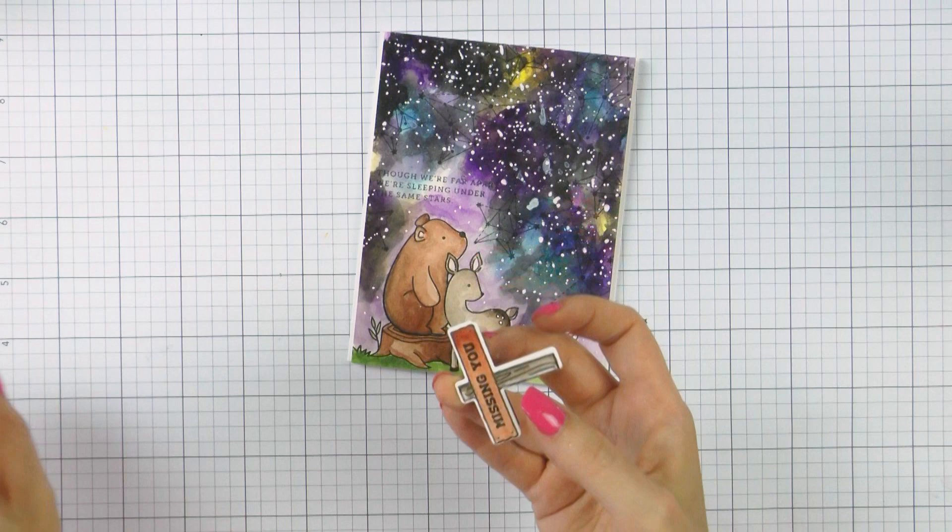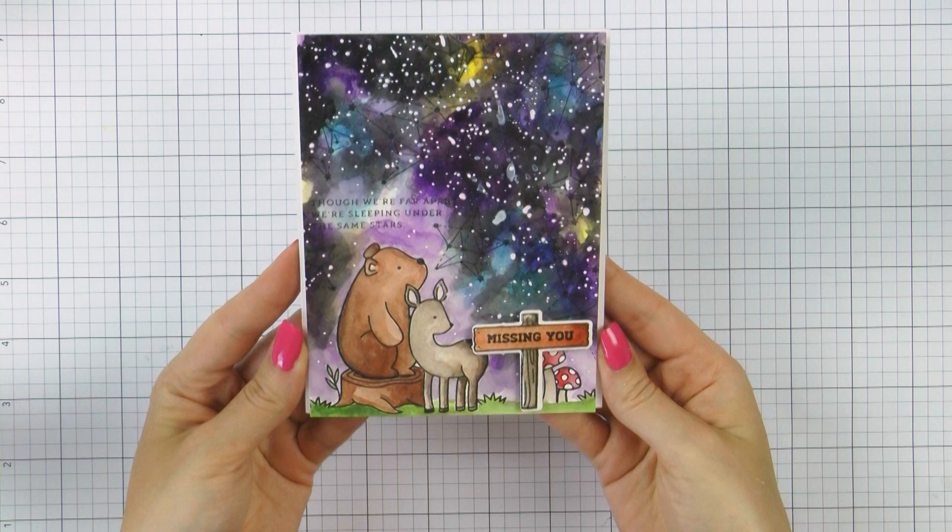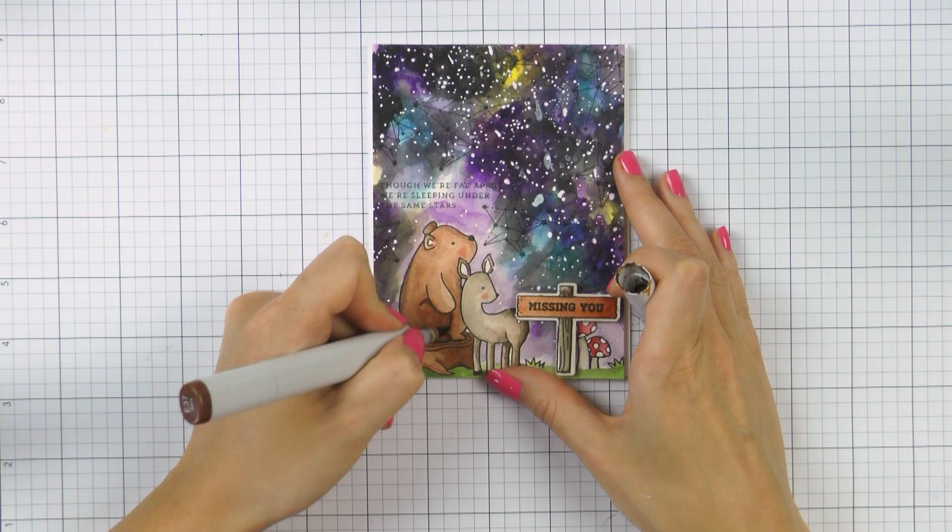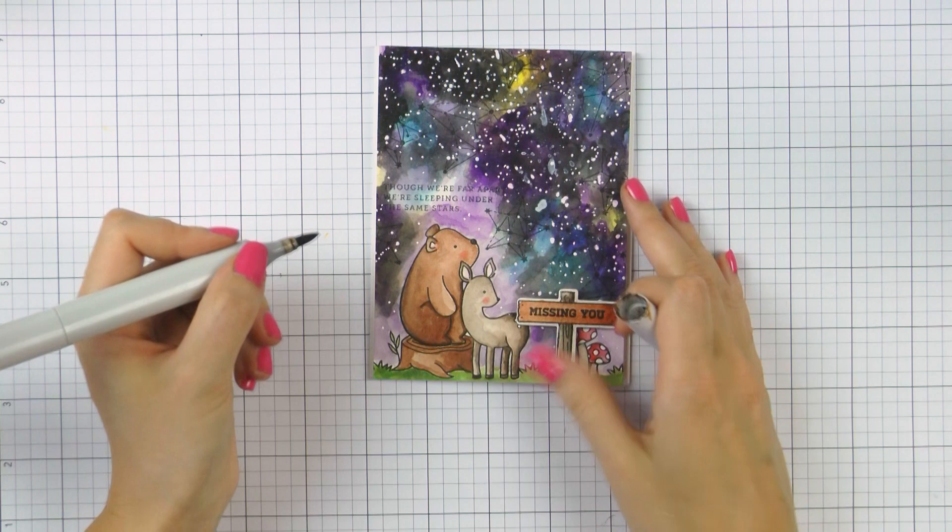Now I mentioned I didn't quite like the coloring on my critters so I used Copics to add some additional details and shading. I used an R20 marker and added blush and also used several colors of brown to intensify the shadows on my bear and also a green marker to fix the grass.